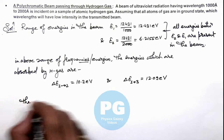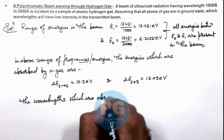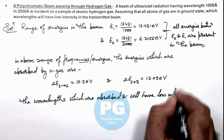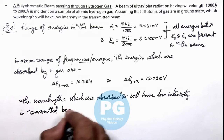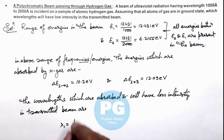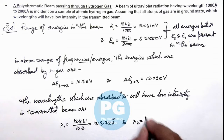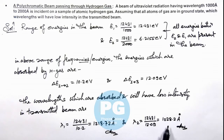So the wavelengths which are absorbed and will have low intensity in the transmitted beam are: lambda 1, which is 12431 divided by 10.2, that is 1218.72 angstrom; and lambda 2, which is 12431 divided by 12.09, which corresponds to 1028.2 angstrom. So these are the 2 wavelengths that are absorbed and will have low intensity in the transmitted beam.